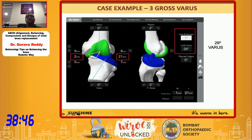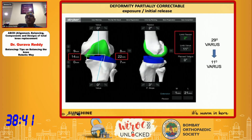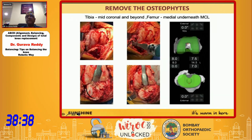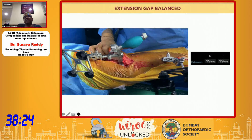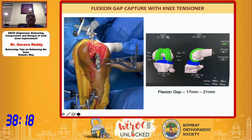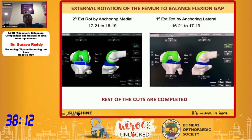For example, in a severe varus case of 29 degrees: after table adjustment it is 11 degrees correctable, and after osteophytectomy it becomes 7 degrees varus. By applying 2 degrees varus to the tibia, 1 degree varus cut, and distalizating the femur by 2 millimeters, I achieved 19 and 19 balance — a nice extension gap balance. This is called the mid-resection protocol. Then for the flexion gap, 2 degrees external rotation anchoring the medial side, and 1 degree external rotation anchoring the lateral side — and the rest of the cuts are completed.